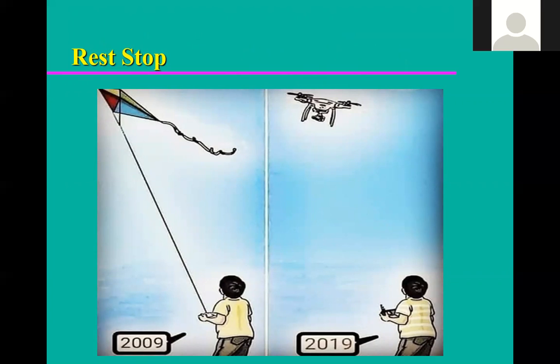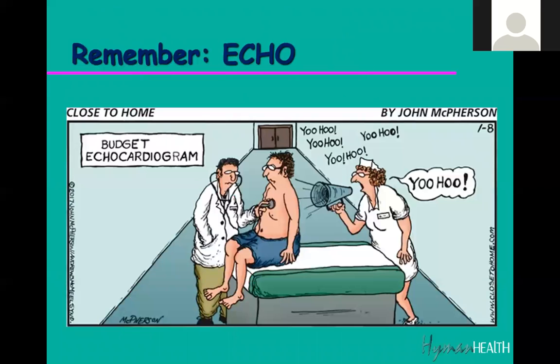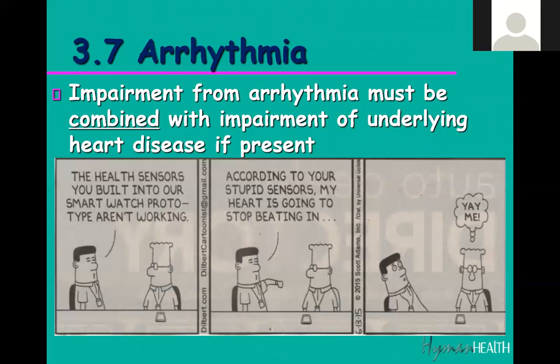Pericardial disease: someone complains of chest pain and shortness of breath. The pericardium is a sac around the heart. How do you know whether the cause is the valves, a dilated heart, congenital heart disease, or the pericardial sac? By doing an echo — that's the only way to know. That's how you get to the proper rating and identify what's causing their symptoms.